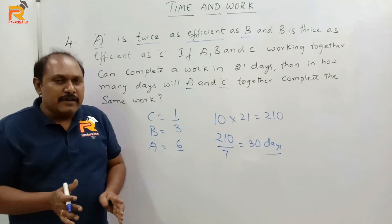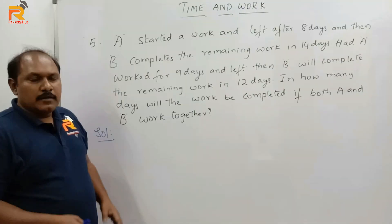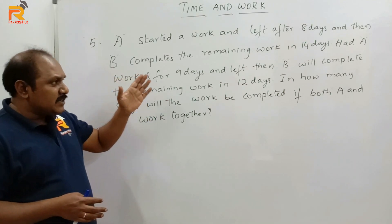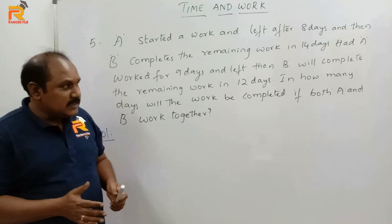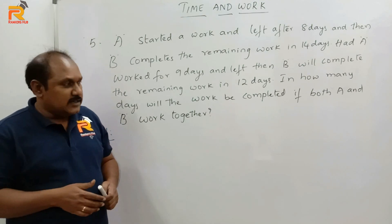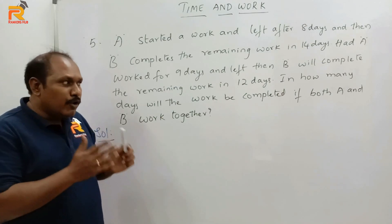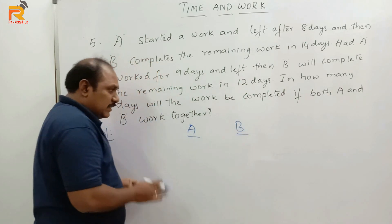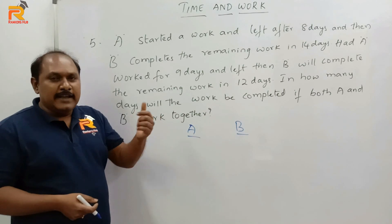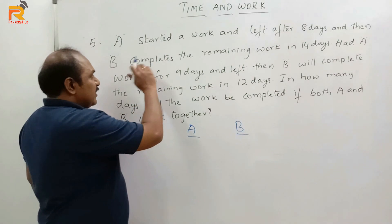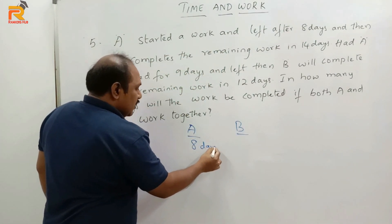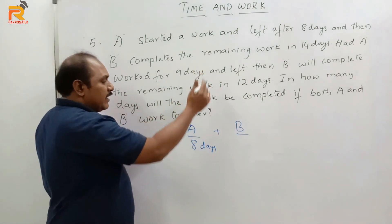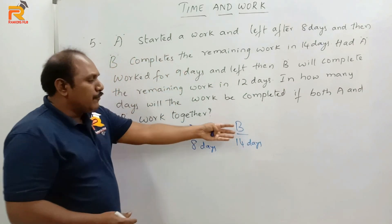So if you can think like this in a very simple way, solving problems in Time and Work becomes very easy. Now let us see the fifth question. A started work and left after 8 days, and then B completes the remaining work in 14 days. Had A worked for 9 days and left, then B will complete the remaining work in 12 days. In how many days will the work be completed if both A and B work together? There are two persons A and B — A starts the work, leaves, then B enters and completes the remaining work.